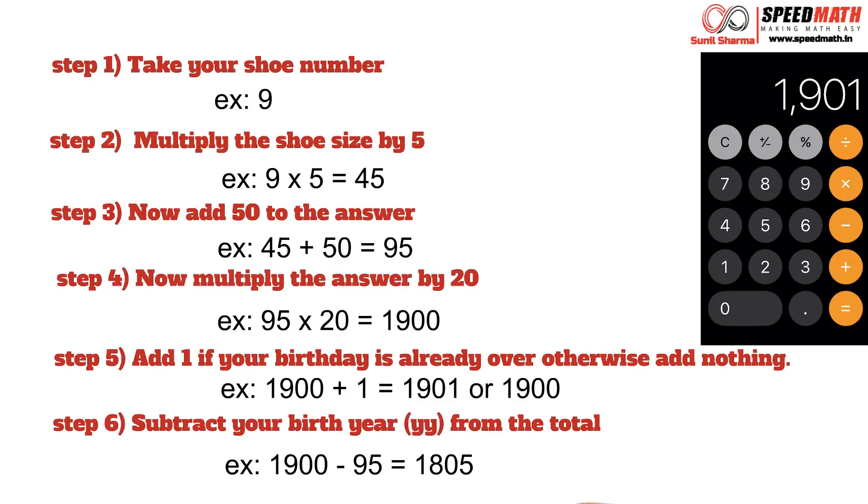So let's say if I consider 1900 as my total, so I'm going to subtract 95 from 1900 which will give me 1805. This is my final total in the calculator.